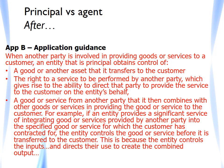The boards also observed that the specified good or service to which the control principle is applied should be a distinct good or service or a distinct bundle. If individual goods or services are not distinct from one another, they may merely be inputs into a combined output — a single promise to the customer. For contracts where goods or services are inputs into a combined output, the entity needs to assess whether it controls the combined output before it is transferred. The boards concluded that when an entity provides a significant service of integrating two or more goods or services into a combined output, it controls that specified good or service before it is transferred to the customer.